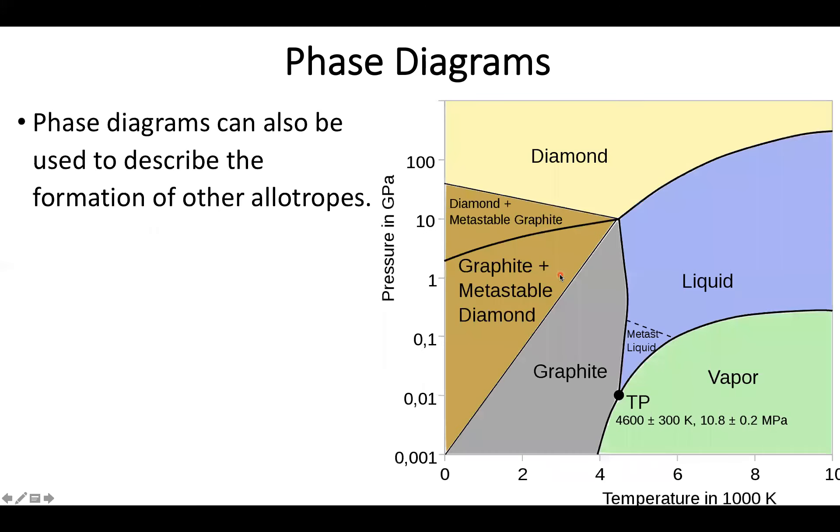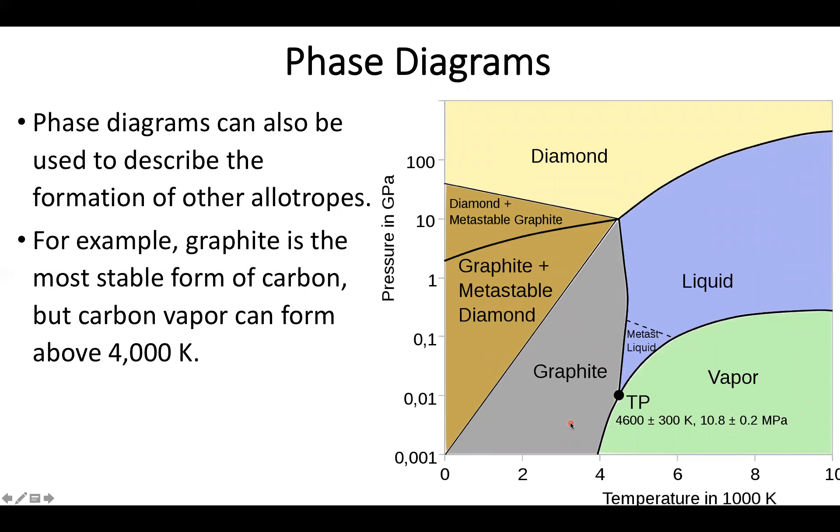It turns out many other different materials have lots of different allotropes and you can figure out which one will be the most stable by looking at phase diagrams. Another famous class of allotropes is carbon, just a single atom. The most stable form of carbon under room temperature and pressure is graphite. Graphite is way more stable but if you heat it up high enough, above 4000 degrees Kelvin, you can vaporize and this is used in some industrial processes.